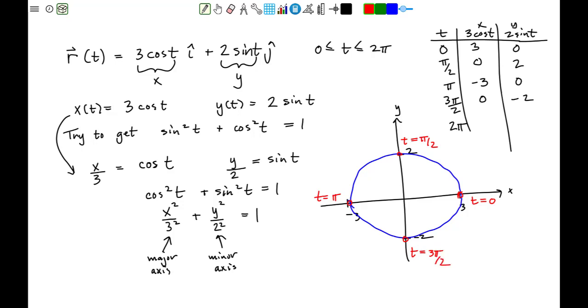And when t is equal to 2 pi, x is equal to 3, y is equal to 0, bringing us back to our starting point. Notice that for increasing values of t, we went around this curve in a counterclockwise direction. So we would indicate the orientation of our curve with these arrows, the orientation being counterclockwise.